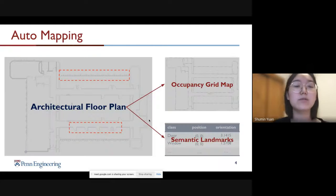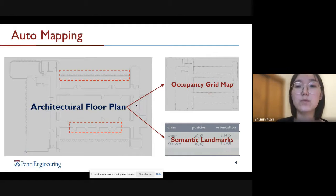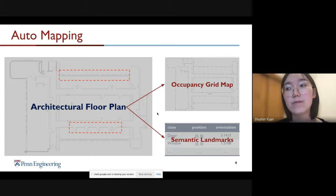I will start with auto mapping. What is the auto mapping process? It converts from an architectural floor plan into an occupancy grid map for navigation and a list of semantic landmarks which consists of class names, positions, and orientations. Those will be very useful as a reference when doing the localization improvement.